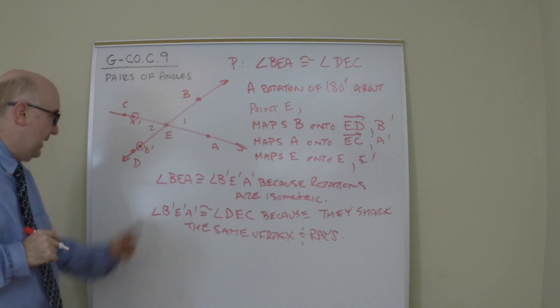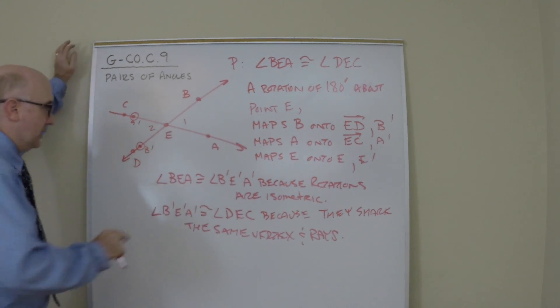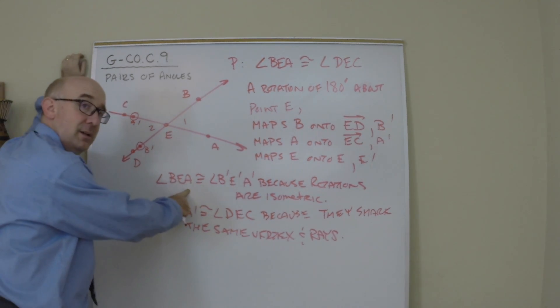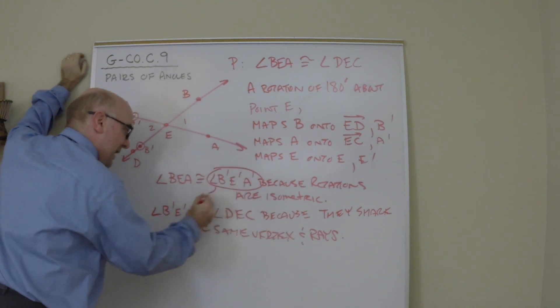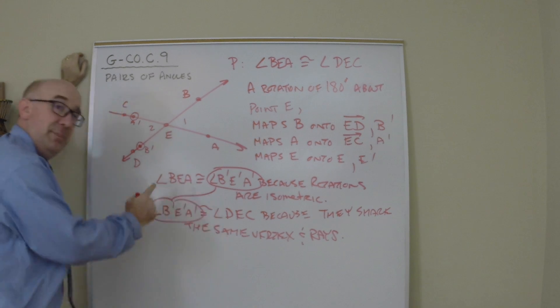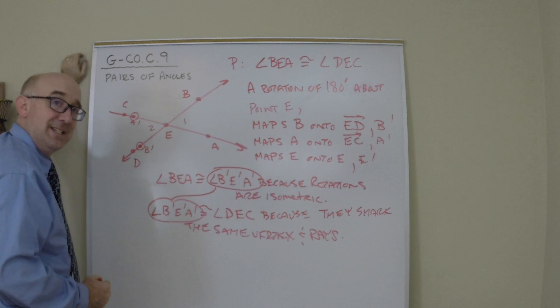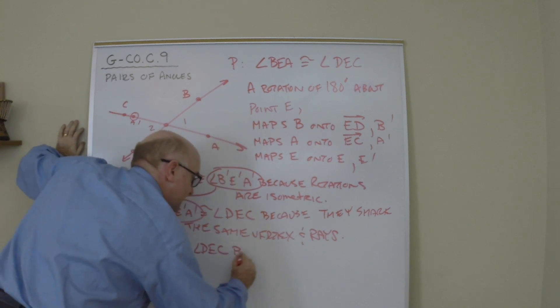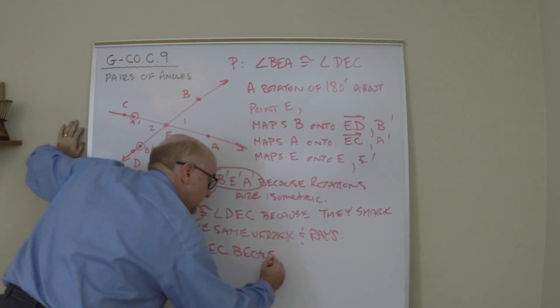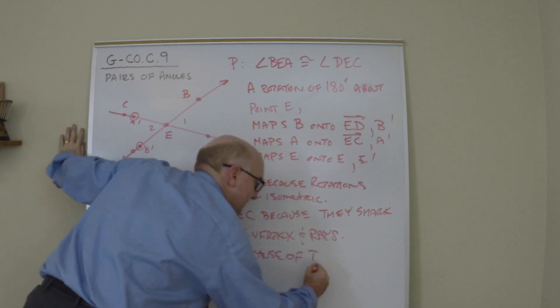The final step is a nice piece of logic. BEA is congruent to B prime E prime A prime. Notice my next line states that B prime E prime A prime is congruent to DEC. The final step is what we call the transitive property. BEA is congruent to DEC because of the transitive property.